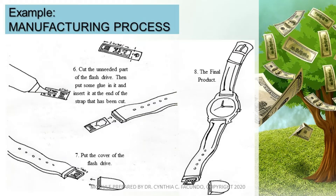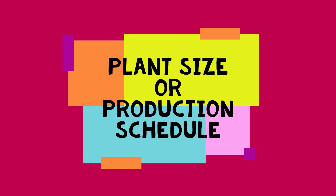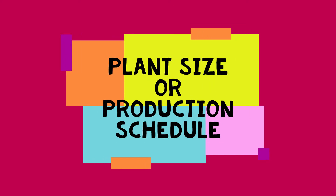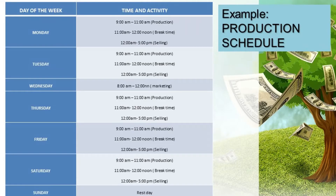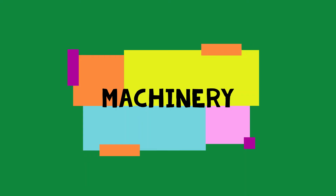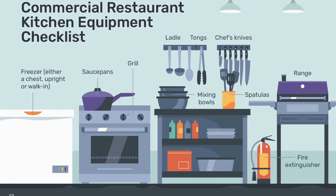Plant size or production schedule. Determination of the optimum plant size is critical to the success of a project. The best possible size of plant is recommended after analyzing the availability, economic, and practicability of different size options.